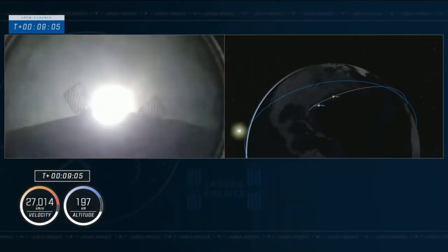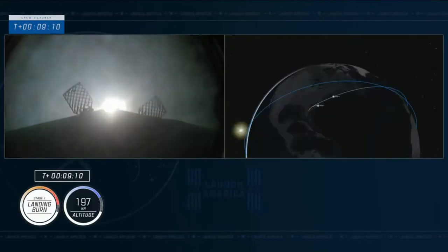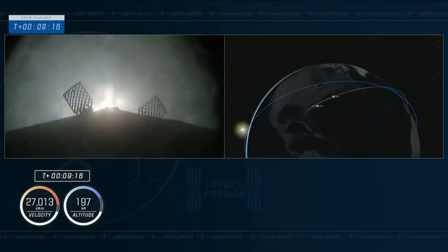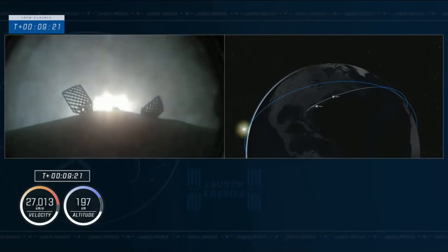Stage 1 landing burn. Dragon SpaceX, nominal orbit insertion. And the second stage has done its job. Our crew, three astronauts, have been delivered into orbit.